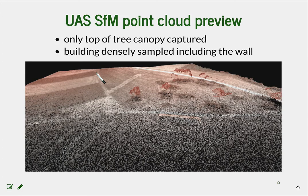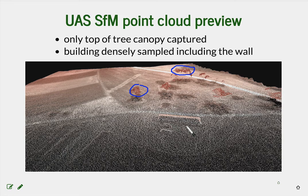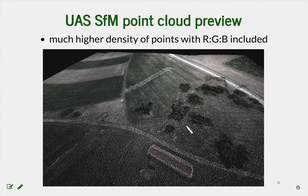Here is how the structure from motion point cloud looks for our area. You can immediately notice the very different capture of the individual trees — you get the canopy but not the entire structure of the vegetation. On the building you can clearly see how much denser this structure from motion point cloud is compared to LiDAR. Here is the same point cloud colored using the RGB information derived from the imagery.